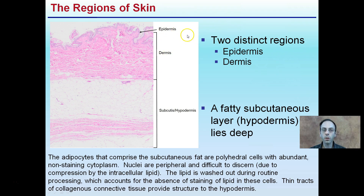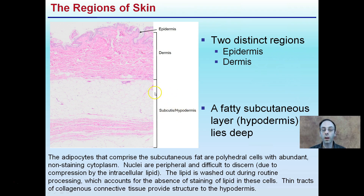The first two distinctive regions are the epidermis — that's the layer that you can physically see — and then you have the dermis below that, and then the subcutaneous or hypodermis beneath that. These terms are used interchangeably. It tends to be fatty, meaning it contains adipose tissue.